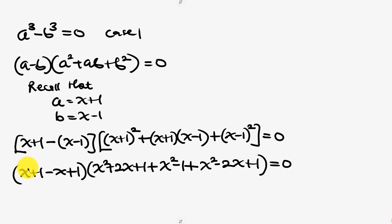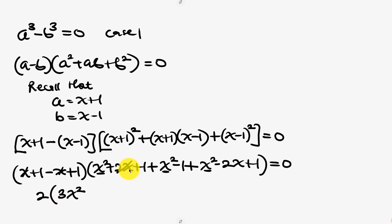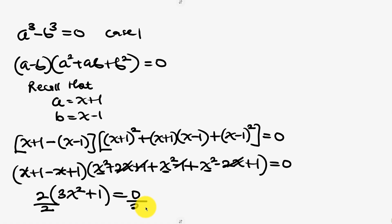Now notice that x−x cancels. We have 1+1 which is 2, times x²+x²+x² which is 3x². The 2x and −2x cancel, and 1−1 cancels too, leaving +1. So we have 2(3x²+1) = 0. Dividing both sides by 2 gives 3x²+1 = 0.